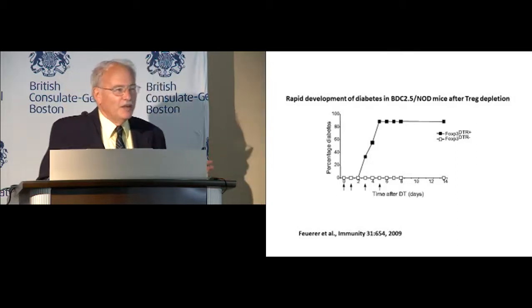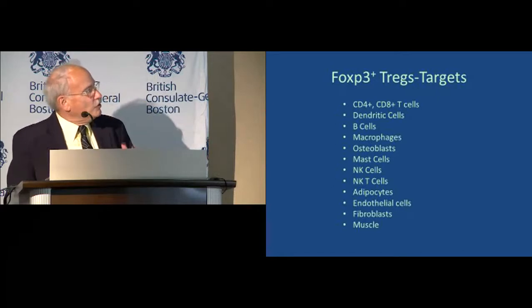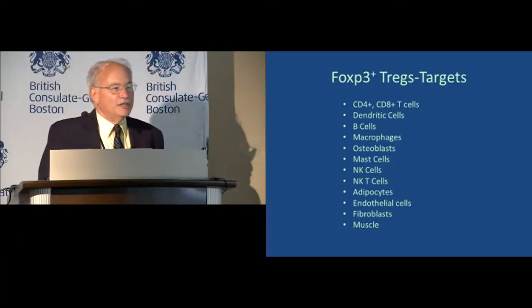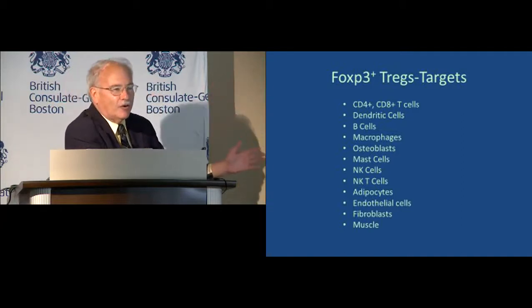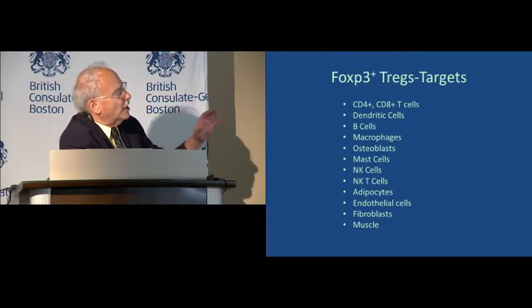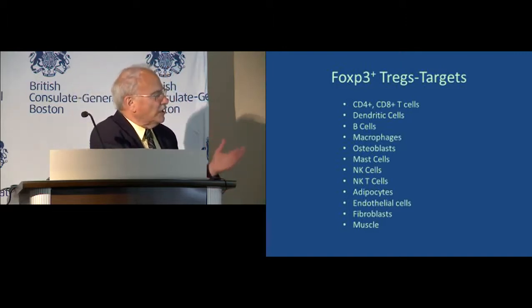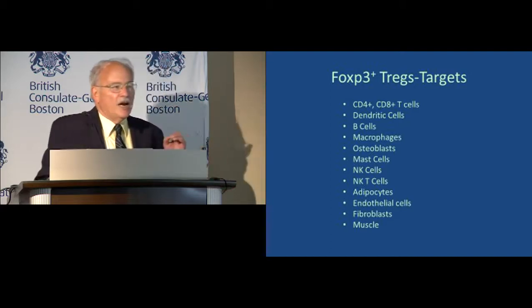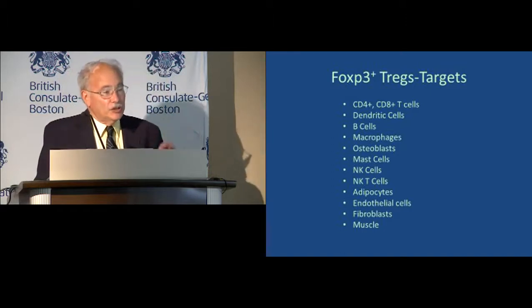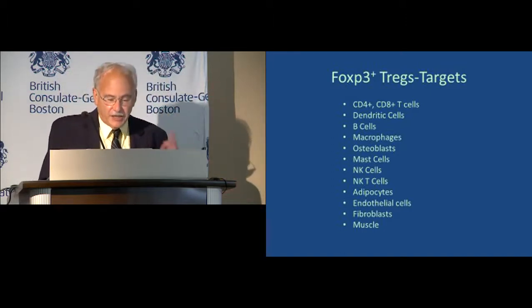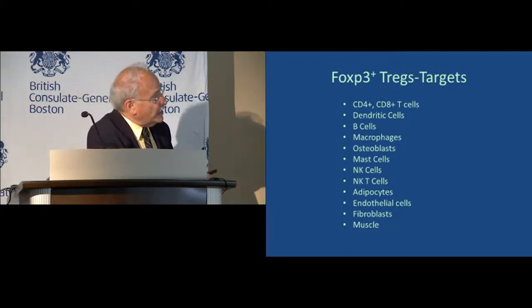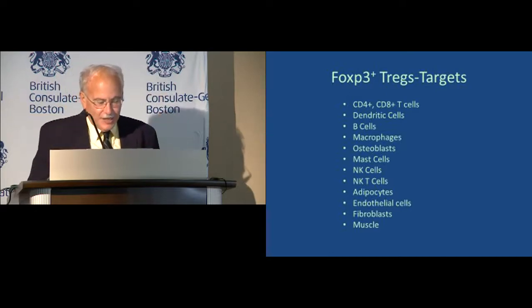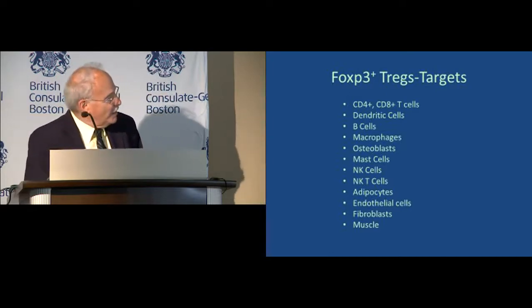We have a few problems with these cells. One problem is they're too good. This is the list of claimed targets for regulatory T cells: other T cells, antigen-presenting cells such as dendritic cells, B cells, macrophages, and a host of innate immune cells including mast cells, NK cells, NKT cells, down to muscle cells. How can one population of cells directly control all of these? I'm an author of several papers claiming they act on T cells, dendritic cells, B cells, macrophages, and even mast cells — though I'm not sure exactly how that last one works.